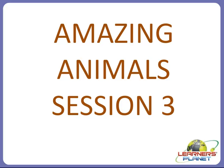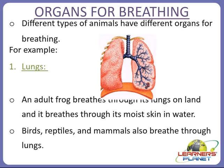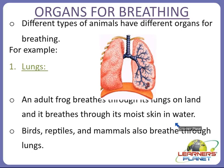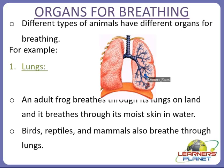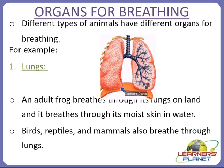Let's start with organs for breathing. Different types of animals have different organs for breathing. For example, lungs — an adult frog breathes through its lungs on land, and it breathes through its moist skin when in water. This type of organ, lungs, is present in adult frogs and also in other animals like birds, reptiles, and mammals. They also breathe through lungs.